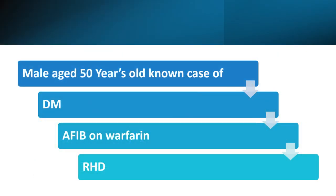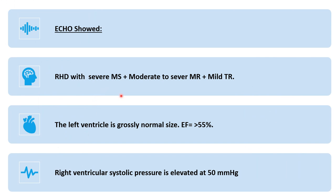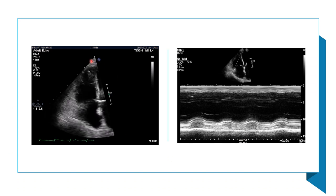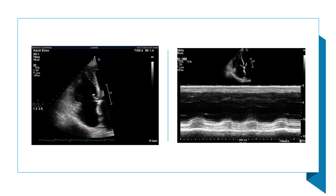The second case is a 50-year-old male with diabetic atrial fibrillation not on warfarin, and rheumatic heart disease. Echo showed severe mitral stenosis, moderate to severe mitral regurgitation, mild tricuspid regurgitation, normal left ventricular ejection fraction greater than 55%, and right ventricular systolic pressure of 50 mmHg. Importantly, this patient had good RV function preoperatively — a key difference from the first case, which had moderately reduced RV.